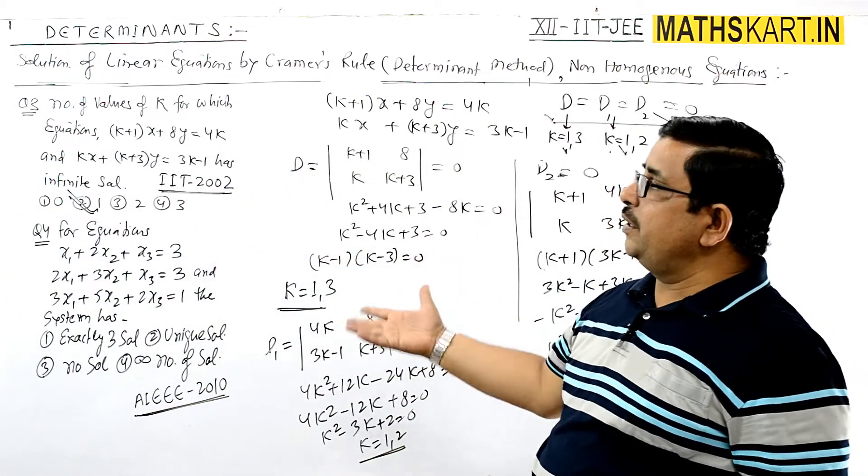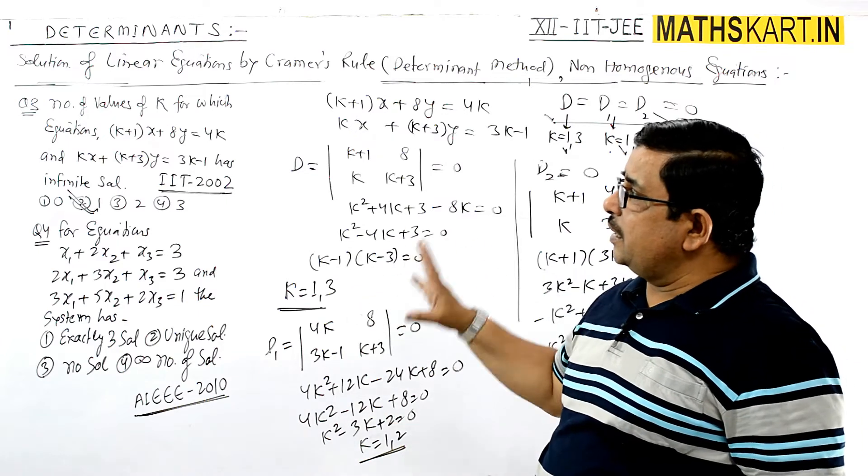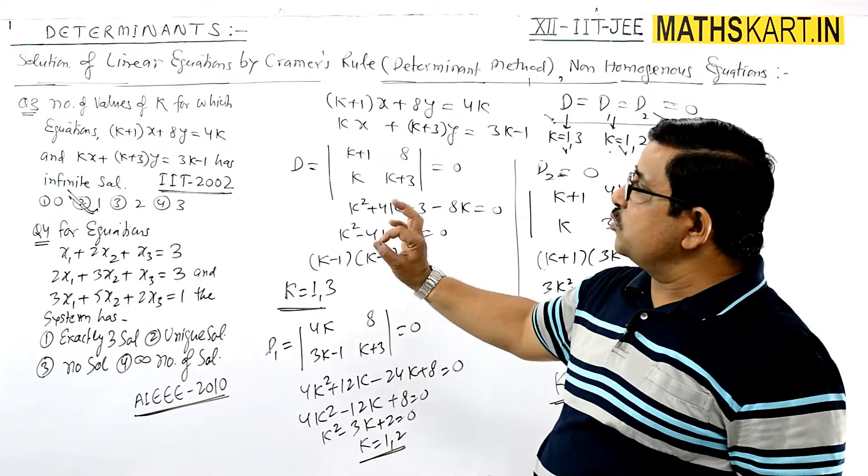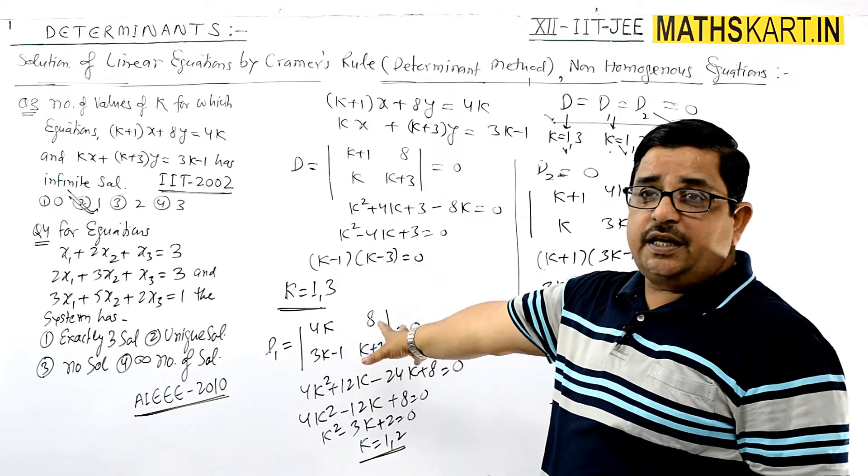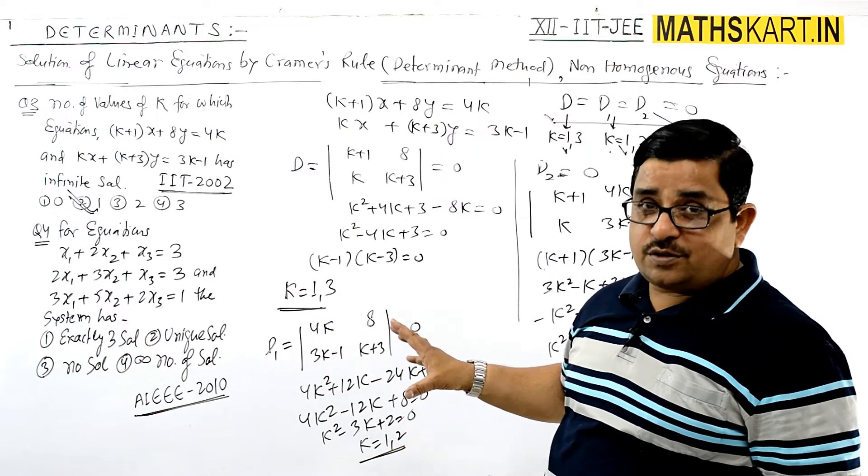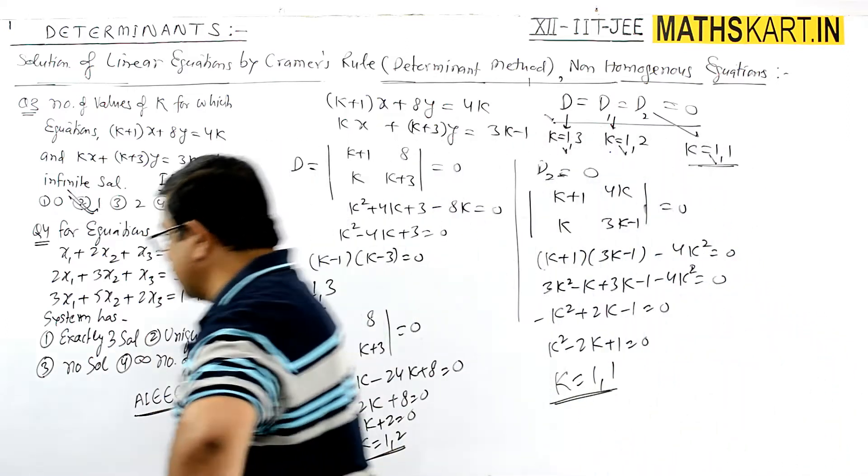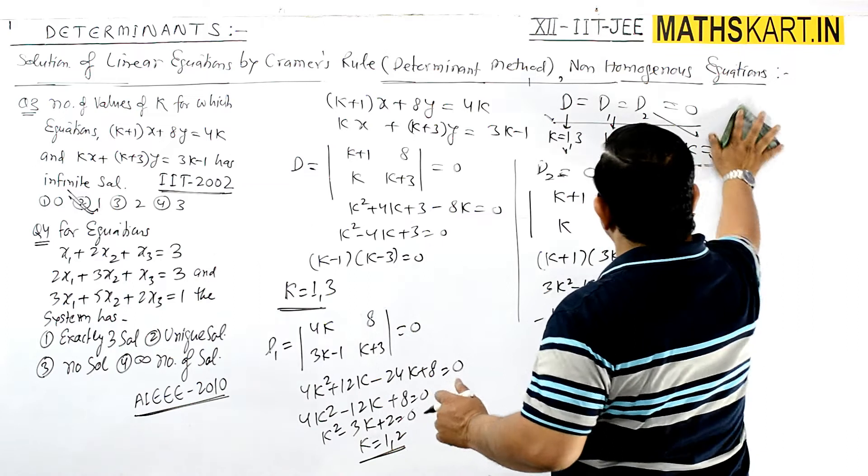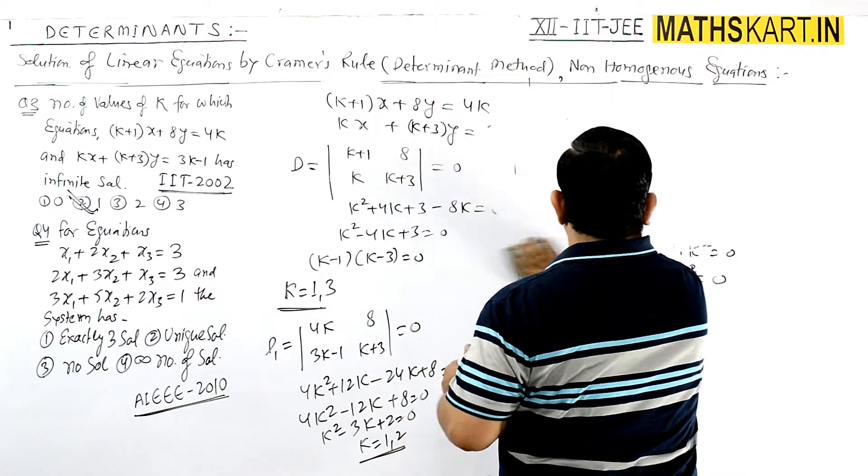The next question asks both how many values of k exist (which is one) and what is the value of k (which is also one). Even if you make a mistake on one part, you might get the other correct. Let's move to question four.